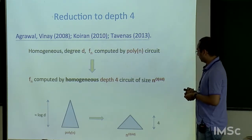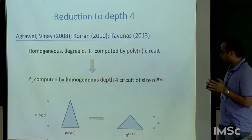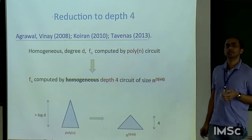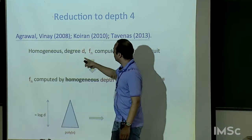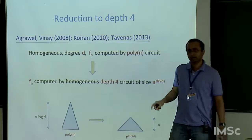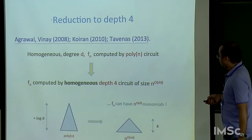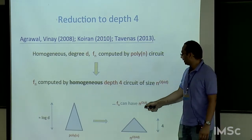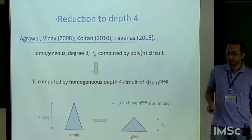Progress was made after a long time — this is 2008 — asking: if you keep compressing, what happens to the blow-up in size? It turns out that if you compress down to depth 4, the blow-up looks like N to the √D. One important aspect: if you start with a homogeneous degree-D polynomial with small size circuit, you end up again with a homogeneous polynomial at depth 4. The homogeneity is preserved, which turns out to be crucial in proving the lower bound.